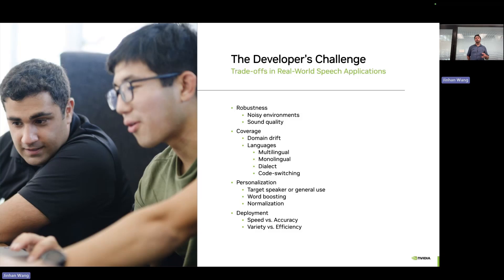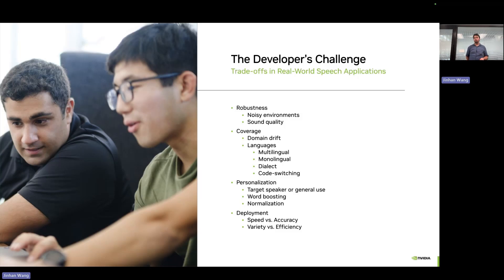At NVIDIA there are generally four categories we focus on when thinking about model development. First is robustness — will our model work in noisy environments as well as clean environments? What type of sound quality are we trying to meet? Are we going to worry about telephony or environmental contamination factors? We also consider coverage — what are the domains our customer base wants? Medical, entertainment, call center? What are the language demands? Monolingual or multilingual? How will dialect play into our model cases, and is there a problem of code switching to accommodate?